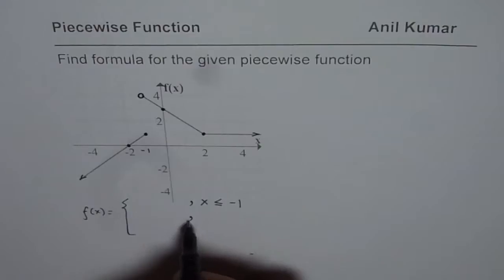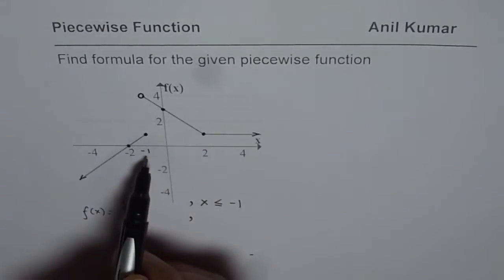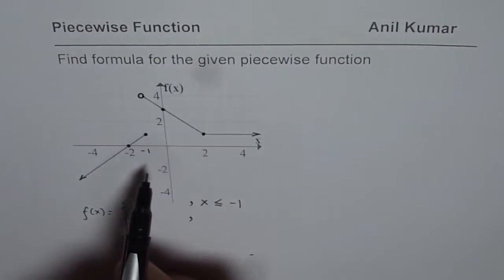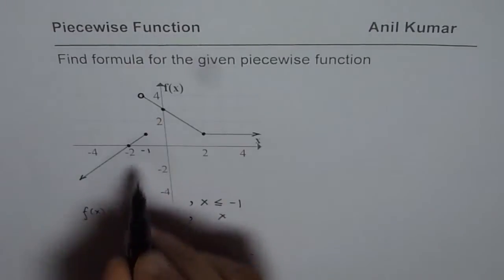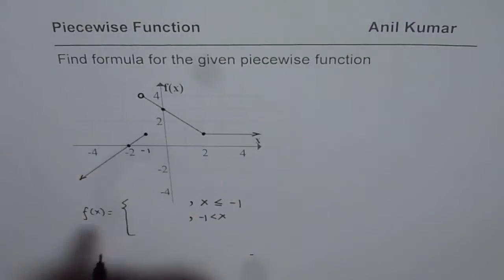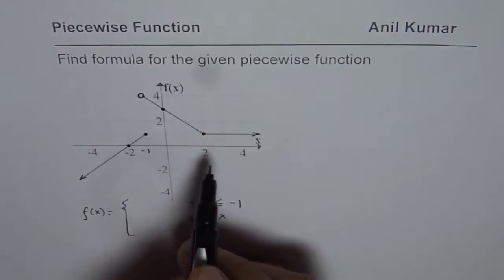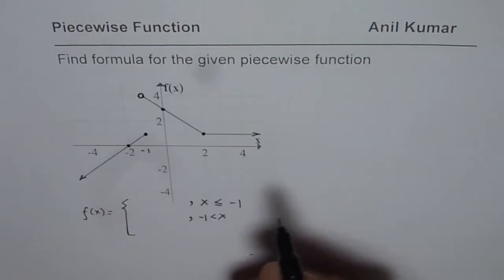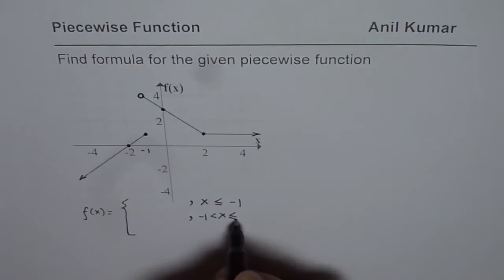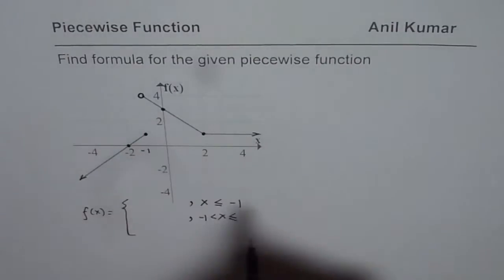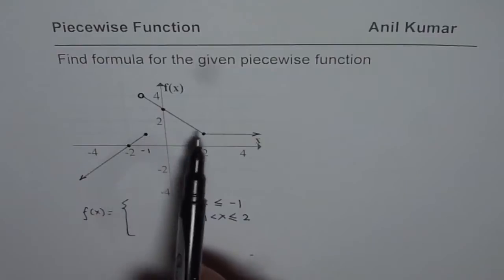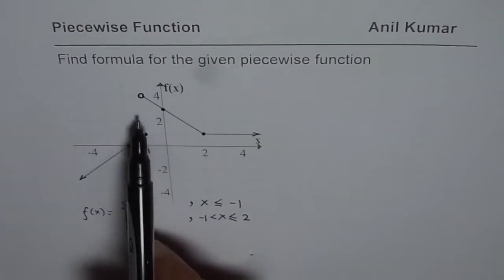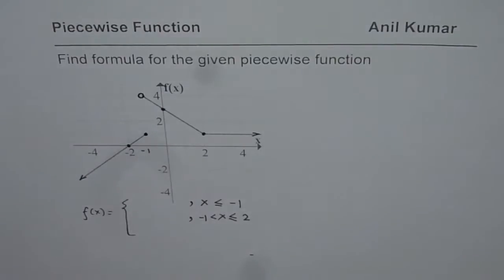The second piece is a line dropping from the value of four to one, and the x values are between minus one, which is not included, to two. We will include two in the second line with the negative slope, so between x equals minus one to two we have the second piece. You can clearly see that these two pieces are not joined together, so at minus one we have a discontinuity.